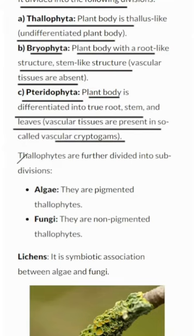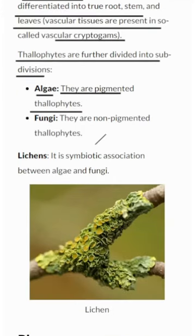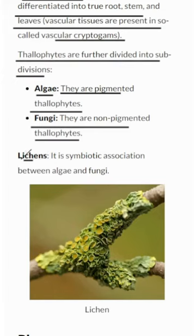Thallophytes are further divided into subdivisions. Algae are the colorful characters among thallophytes, thanks to their pigments. Fungi are the non-pigmented thallophytes, often mysterious. Lichens represent a partnership between algae and fungi — like a superhero duo.